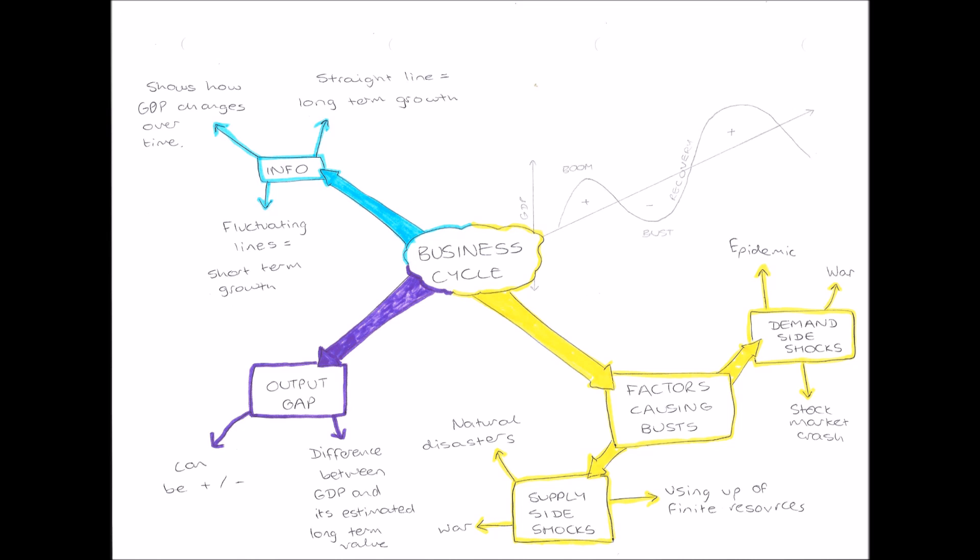And also the using up of finite resources. So if for example we use up all of the oil, then we will not be able to produce any more goods with oil. So any businesses that had oil based products, they will therefore not be able to sell any goods, therefore will not make any profit, therefore will crash. So the economy will go bust.